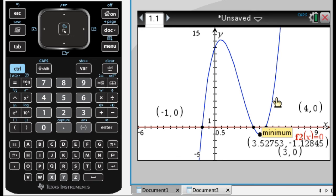So I click one more time for the upper bound, and then you can see this tool goes away on its own, you don't have to do anything. So the minimum is when x is 3.528, let's say, the y-coordinate is negative 1.128.